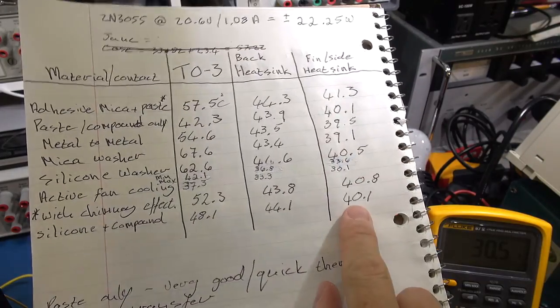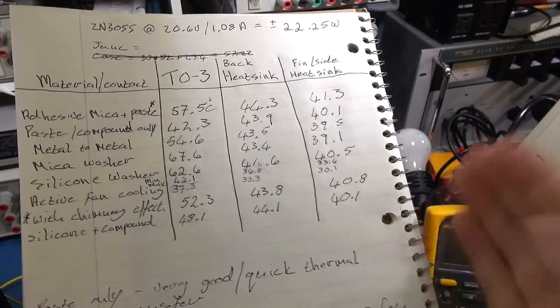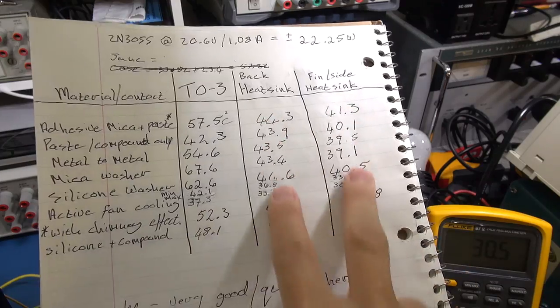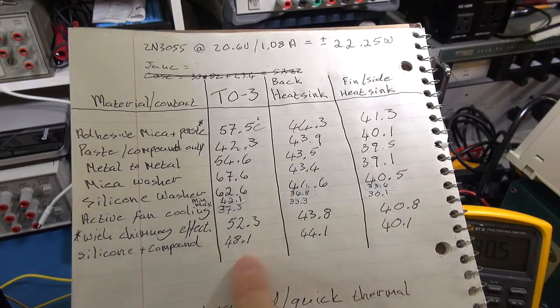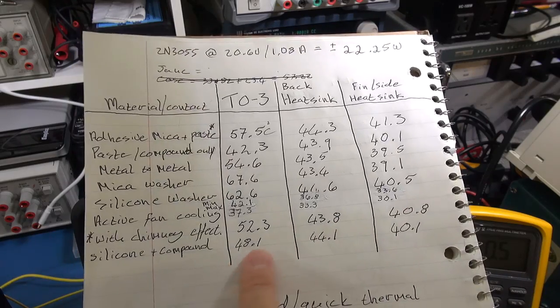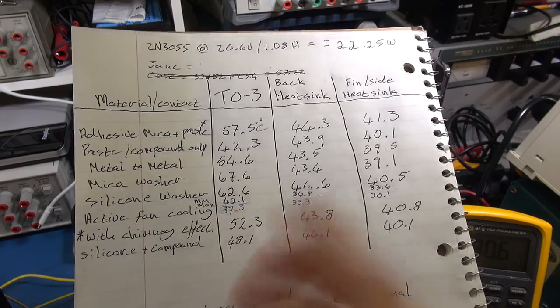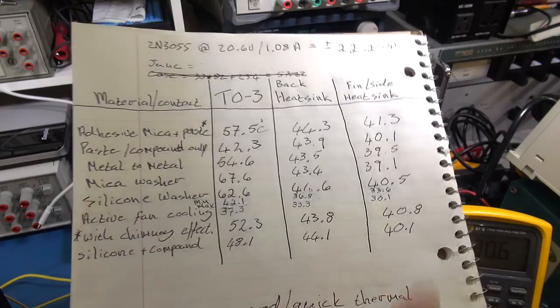Previously for this combination of silicon washer and heat compound it was sitting at 48.1 degrees, 44 and 40. The 44 was the back of the heatsink, 40.1 was the side. These remained fairly consistent through all the testing—the ones on the actual power transistor were the more interesting ones.